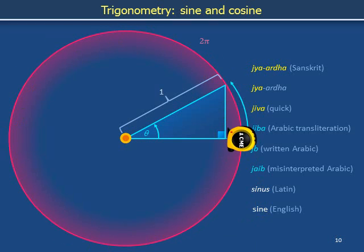The length of the leg opposite the label for the angle theta is called sine of theta, and the length of the leg adjacent to the label for the angle theta is called cosine of theta.